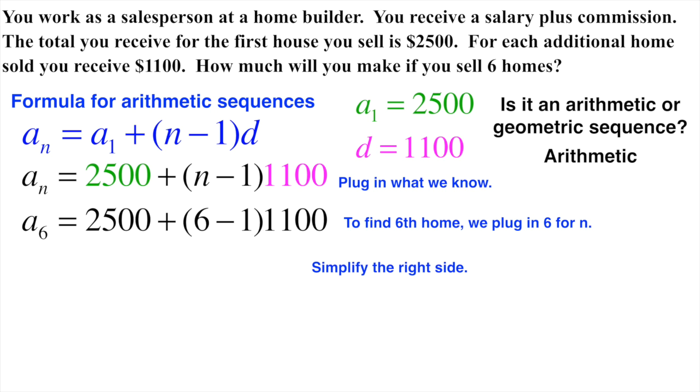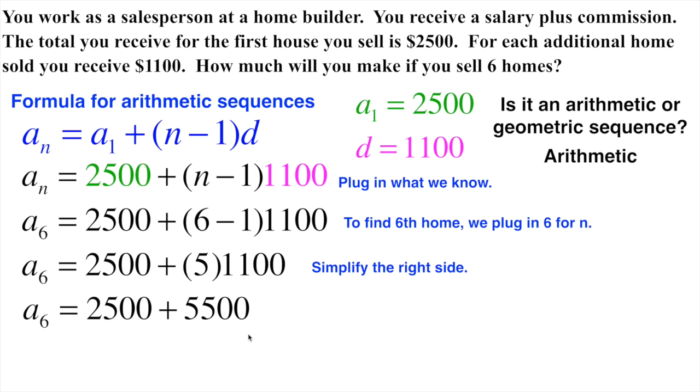Now what we have to do is simplify the right hand side. So six minus one is five. Five times 1,100 is 5,500. We're going to simply add these two together. 2,500 plus 5,500 would give me 8,000. Now you can normally put the dollar sign, that would be fine. If you're doing it on the computer leave any sort of labels off. Don't put any decimals. Just write 11,000 will be fine.